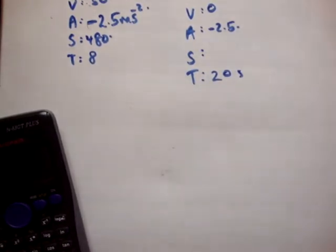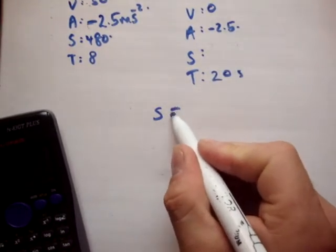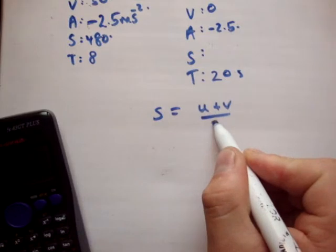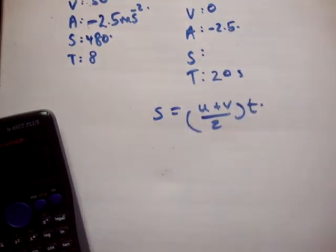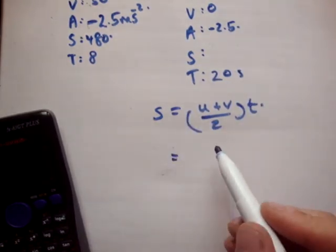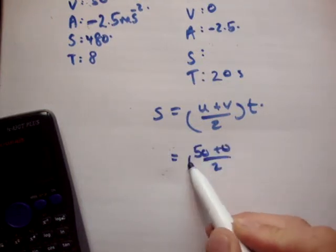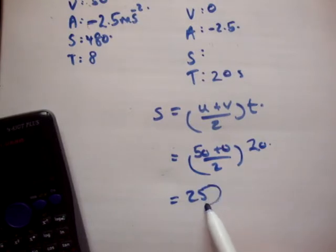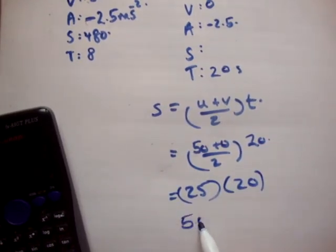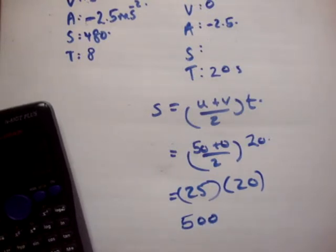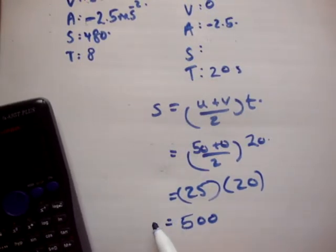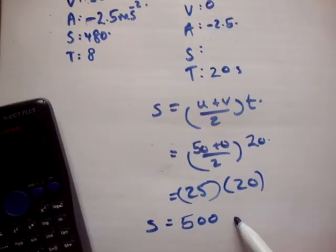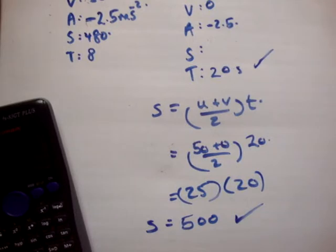To get the distance, I'm going to use the same formula as last time. s is equal to u plus v over 2 times the time, equals 50 plus 0 over 2, which is 25 times 20, equals 25 times 20 is equal to 500. Is it 500 or 5000? Geez, my algebra is terrible. 500. So let's check that out. And we see that 500 is correct, which meant that our time is correct. So look, I'm hoping that you're seeing that there's a pattern to these.